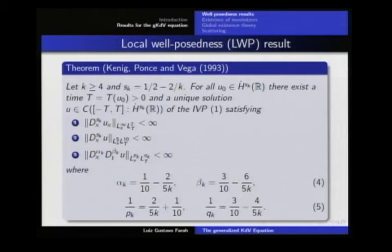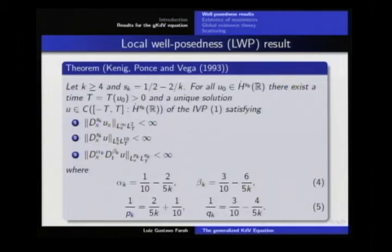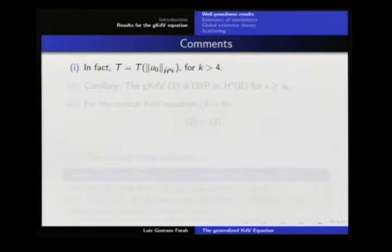A good remark: for K equal 4, which is the critical case, s_K equals zero, so there are no x-derivatives in the first two norms. Computing K equal 4 gives alpha equal 0, beta equal 0, p_K equal 5, and q_K equal 10, so norms 2 and 3 are equal in the critical case. The KPV result provides a generalization of the critical case in this direction.